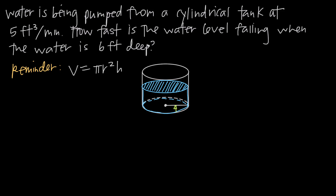Related rates problems can be a little tricky when we're trying to decipher the question. What we can say is that the volume of the water is changing, because if we're pumping water out of the tank, then the volume of the water inside the tank is going down. We also know that the water level is falling, so it should be getting shallower and shallower.